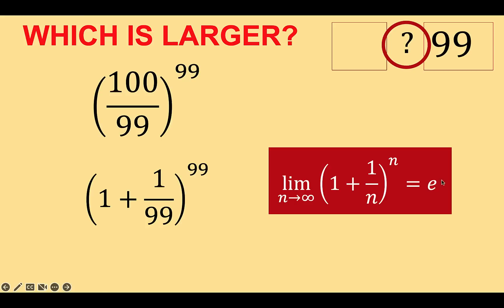Now, since the form here is the same as this form, and this number e is the upper limit of this expression when n approaches infinity, and since 99 is less than infinity, then we know that the value of this expression must be less than e because e is the upper bound. So we can now say that the value of this expression must be less than 2.71 or less than e.